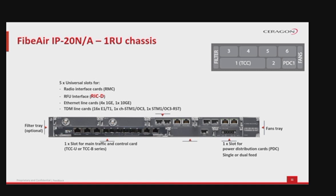The RFU interface RIC-D is for use with RFUD or RFUS with integrated Power over Ethernet, and RFUDHP powered by external DC power, supporting up to 4096 QAM. Available Ethernet line cards include: LIC-XE4 electrical with 4 GB ports featuring 1 GbE combo and 3 GbE electrical RJ-45 interfaces (slot 2 only); LIC-XE4 optical with 4 GbE ports featuring 1 GbE combo and 3 GbE optical SFP interfaces (slot 2 only); and LIC-XE10 with 1 optical 10 GbE (slot 2 only).